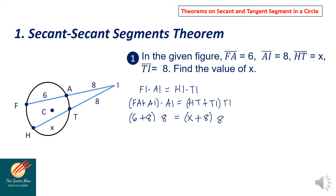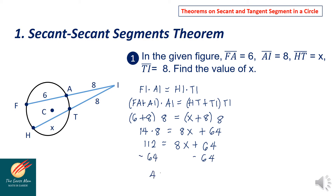Simplifying: 14 times 8 equals 8X plus 64, since we distribute 8 to X and 8 times 8 is 64. So 112 equals 8X plus 64. Subtract both sides by 64: 48 equals 8X. Divide both sides by 8, so X equals 6. Therefore, the value of X is equal to 6.